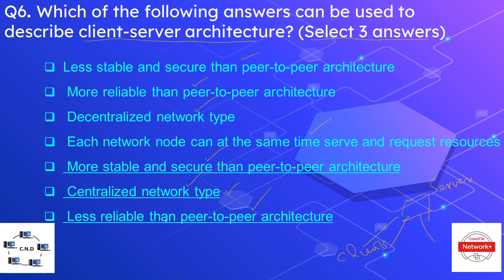The third correct option is that client-server is less reliable than peer-to-peer architecture. If the server goes down, the whole network for the clients goes down. In peer-to-peer, clients communicate directly with each other, so if one client goes down, the others can still communicate — making peer-to-peer more reliable than client-server architecture.